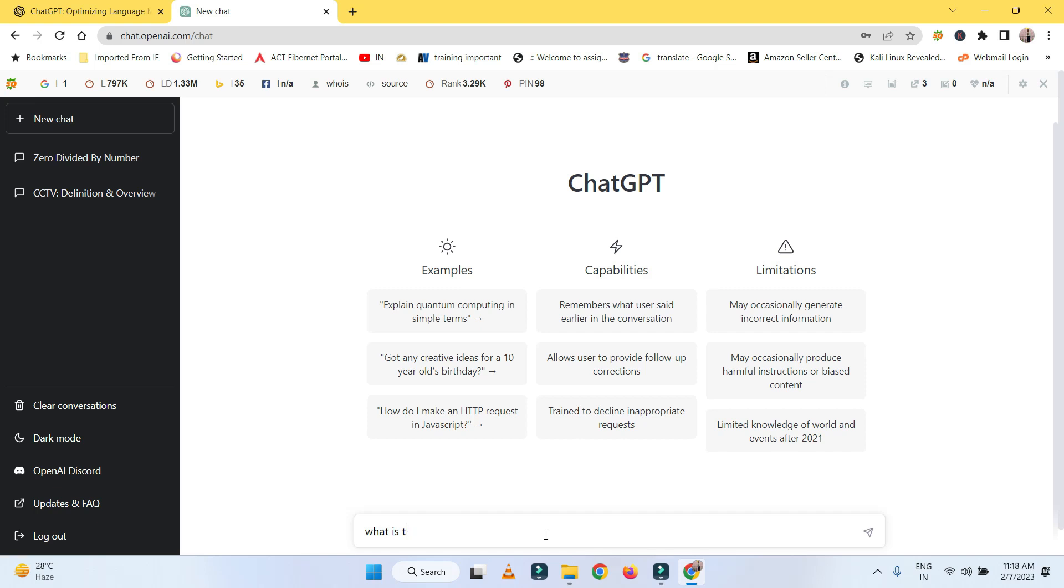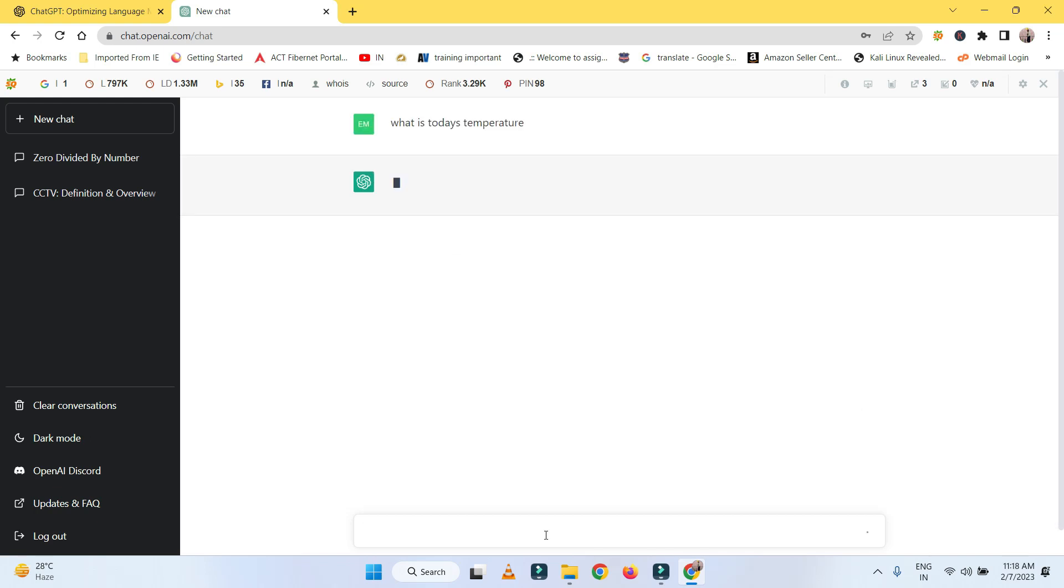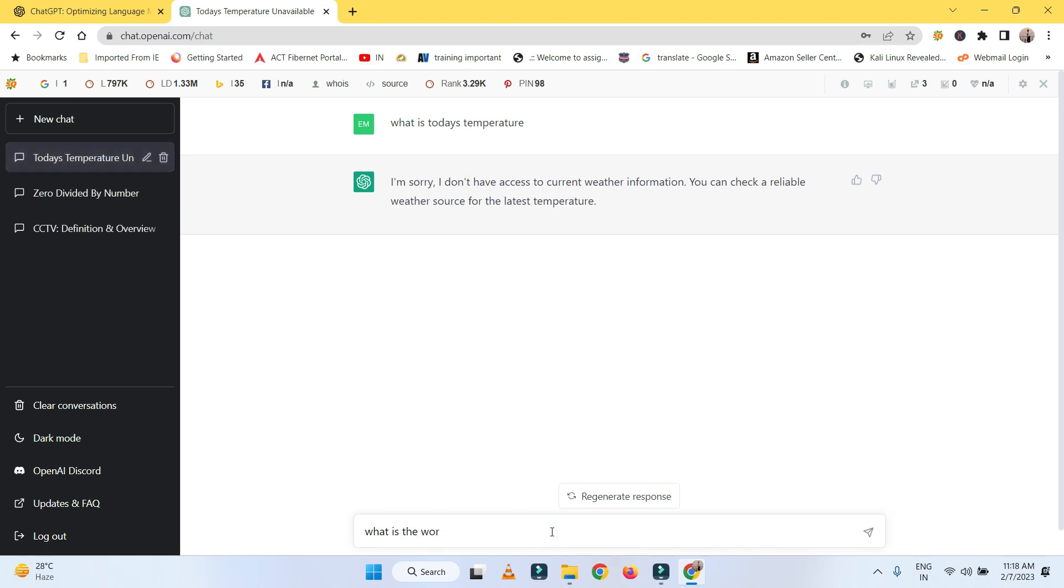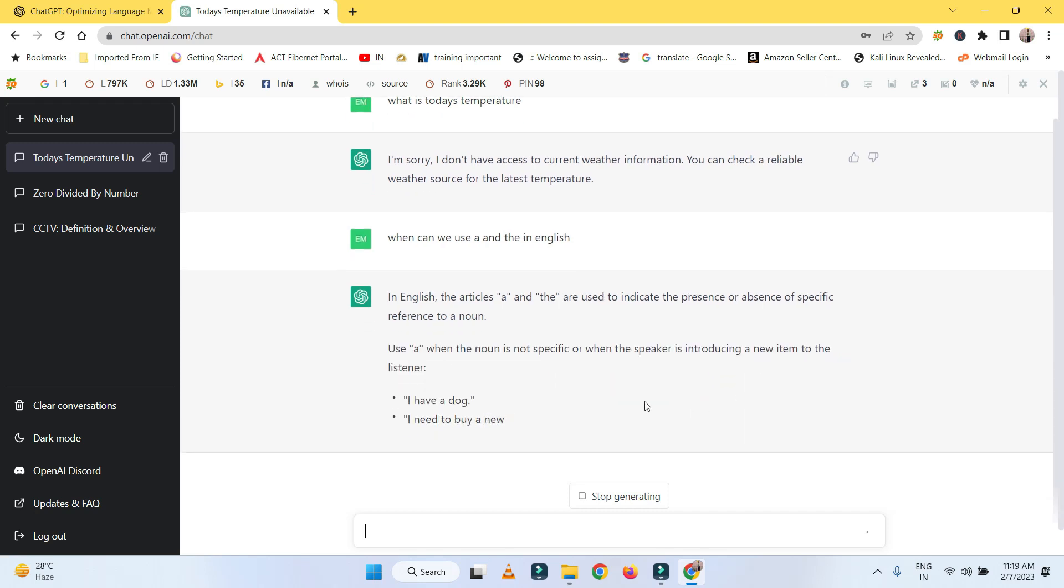Now I'm searching something: 'What is today's temperature?' Here I did not give the location, so it will say, 'I'm sorry, I don't have access to current weather information. You can check a reliable weather source for the latest temperature.' I'm typing something else: 'When can we use A and THE in English?' It will come up with results—A and THE are articles and can be used in different sentences.